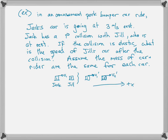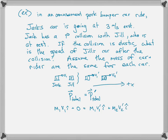We write momentum conservation: P total initial equals P total final, because momentum is conserved in a collision unless stated otherwise — there are no net external forces, or it happens instantaneously. So M₁V₁ plus M₂(0) for Jill equals M₁V₁ prime plus M₂V₂ prime. Because it's one dimensional we don't have to worry about unit vectors. Since the masses are equal and cancel, we end up with V₁ = V₁ prime + V₂ prime.